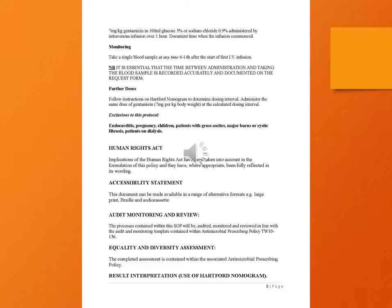Further doses: follow instructions on the Hartford nomogram to determine dosing interval. Administer the same dose of gentamicin 7 milligrams per kg body weight at the calculated dosing interval. Exclusions to this protocol: endocarditis, pregnancy, children, ascites, major burns, cystic fibrosis, and patients on dialysis.